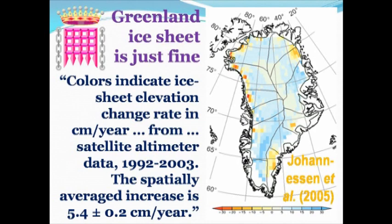We now move to Greenland where I cited a paper by Ola Johannesson in 2005. The paper is quite plain and I put the words from the paper on the slide. Colours indicate ice sheet elevation change rate in centimetres per year from satellite altimeter data from 1992 to 2003 — an 11-year period.